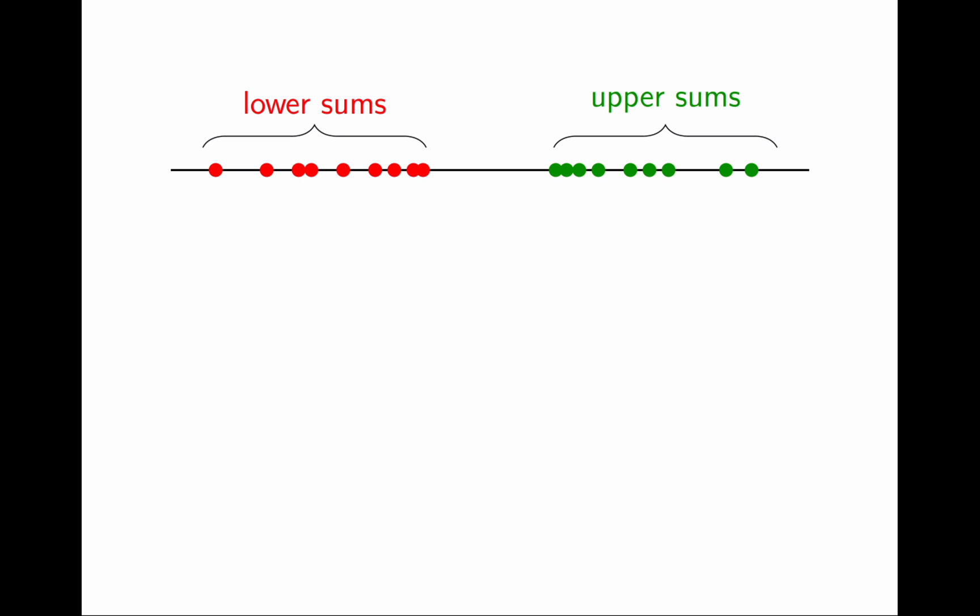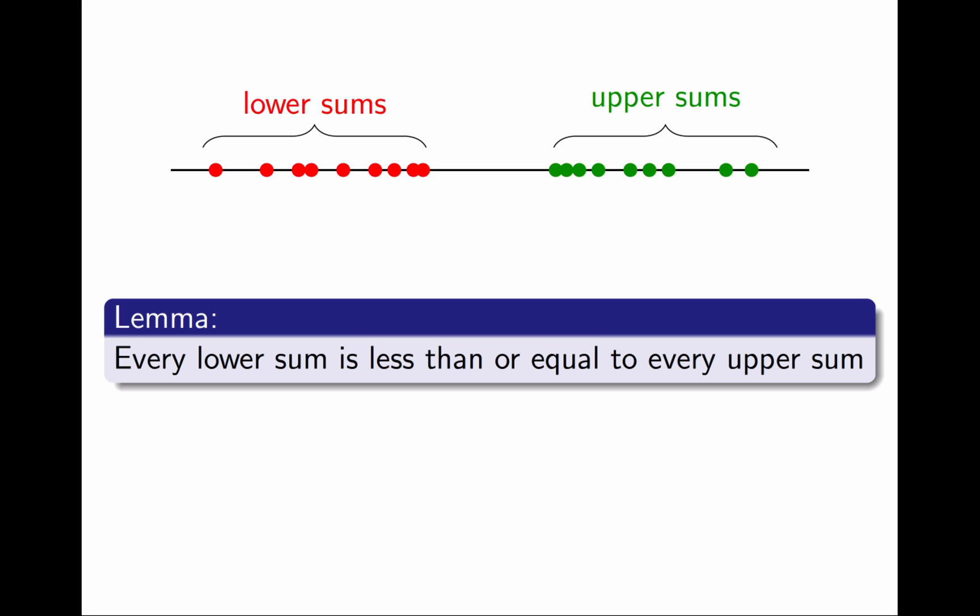Similarly, I could compute all possible upper sums. The way I drew this picture, I am making an implicit assumption that every lower sum is smaller than or equal to every upper sum. This makes sense geometrically, and it turns out to be true, but it is a bit subtle and it needs to be proven. I am calling it a lemma. I will postpone the proof till the next video. For now, let's see what I can do with this assumption.